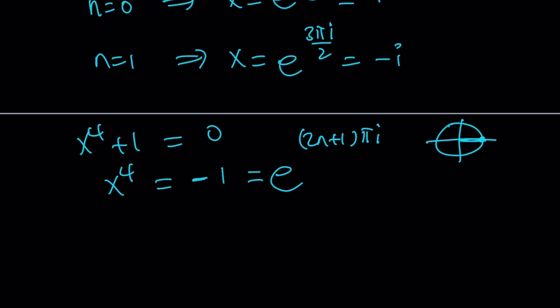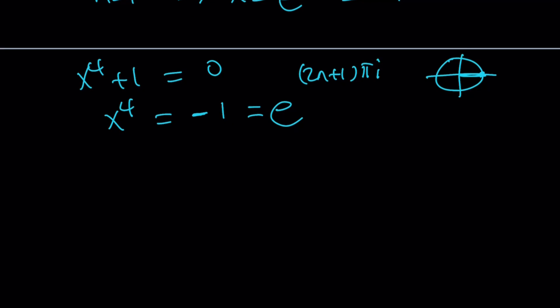And then, to find the fourth roots, all we have to do is divide the exponents by 4. So it's going to look like this.